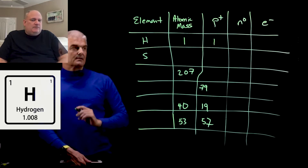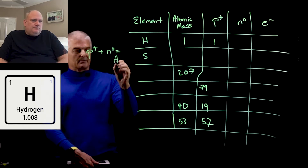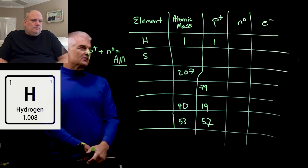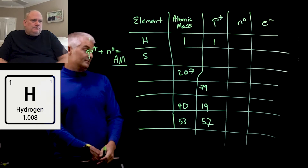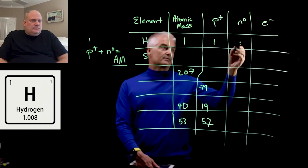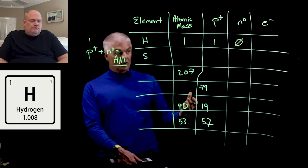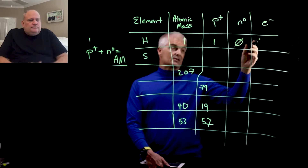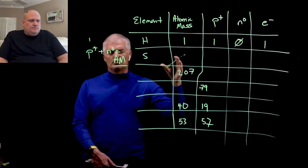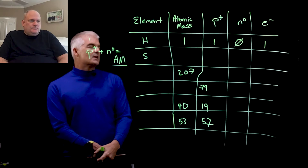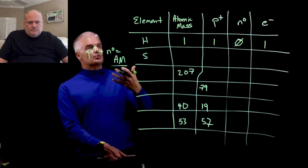Remember that protons plus neutrons equals the atomic mass. So 1 plus what equals 1? That means hydrogen has zero neutrons — it's the only atom that has no neutrons. The electrons are equal to the atomic number in a neutral atom. We'll talk later about how atoms can lose and gain electrons, but for neutral atoms, the number of protons and electrons will be the same.